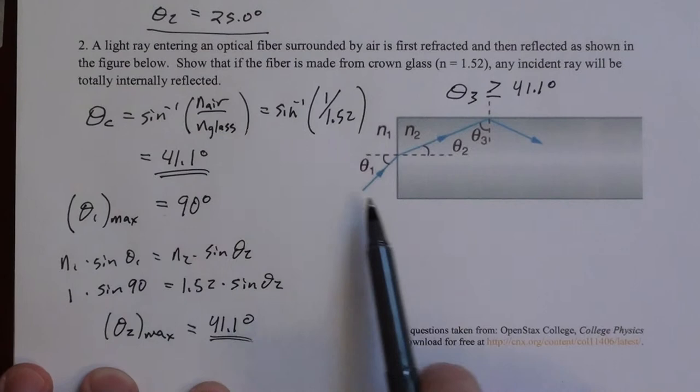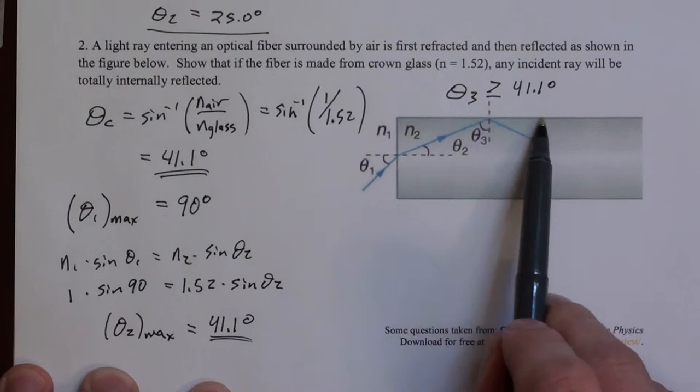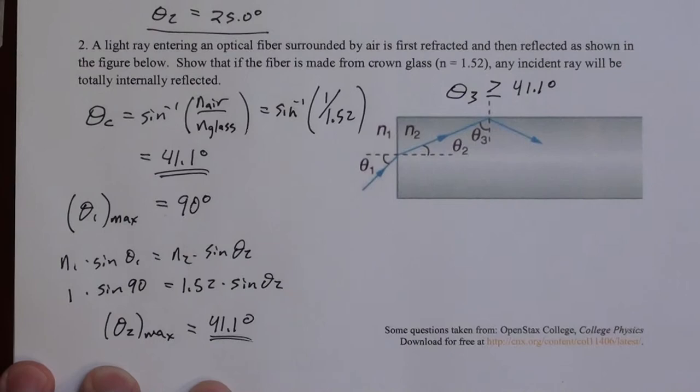So when you try to find a critical angle, you say what angle, what incident angle results in a 90 degree refraction, which is actually not passing this through. We're doing the same thing here, but instead of going out at 90 degrees, we're coming in at 90 degrees. That's why the math works out the same.